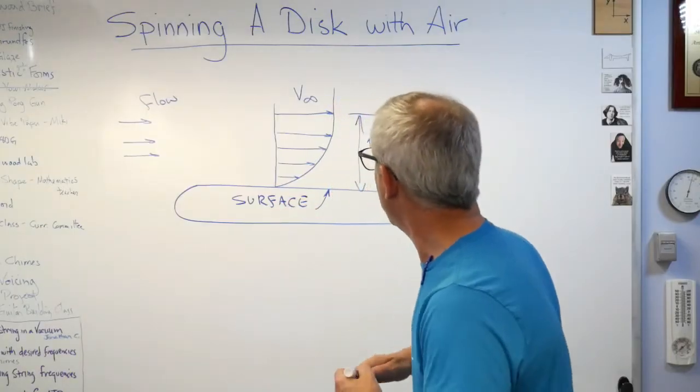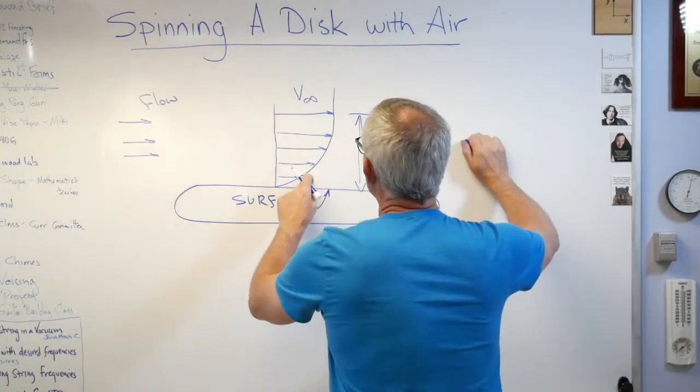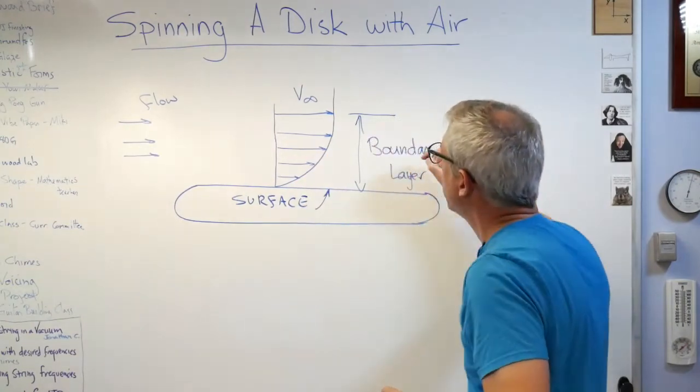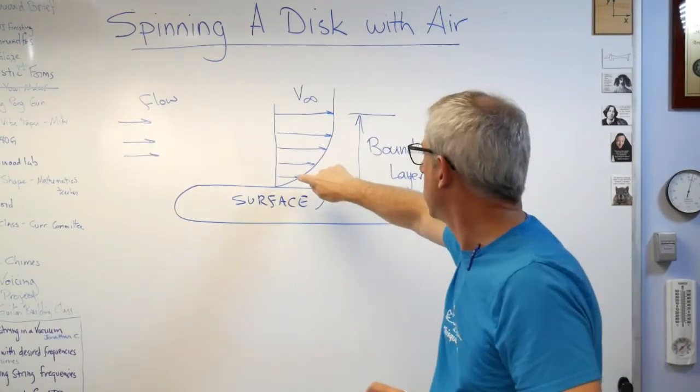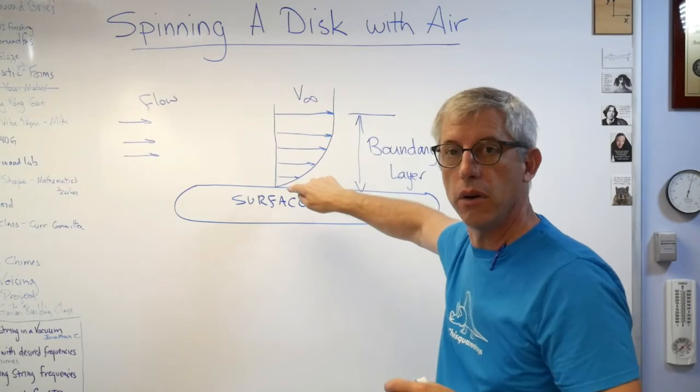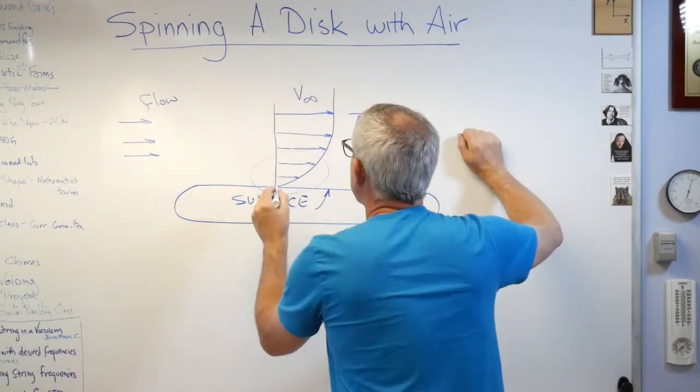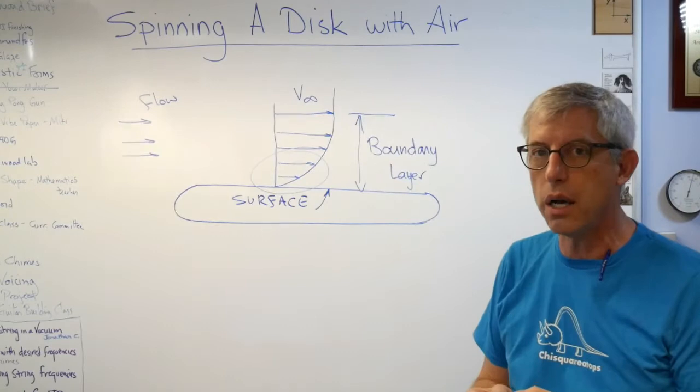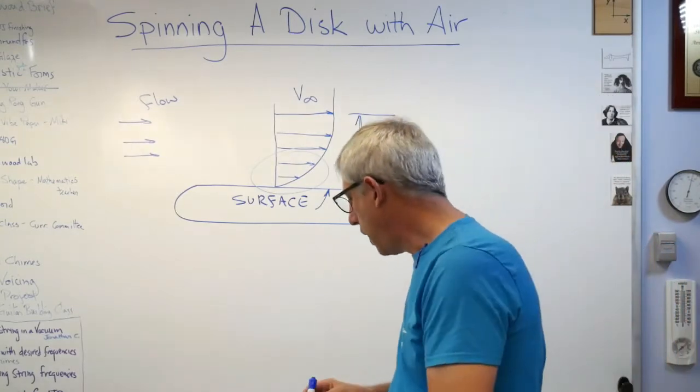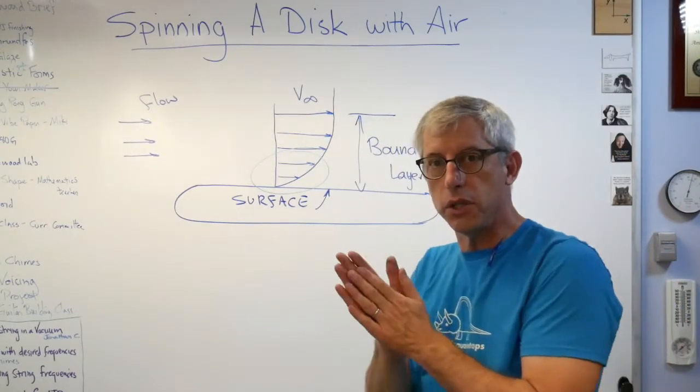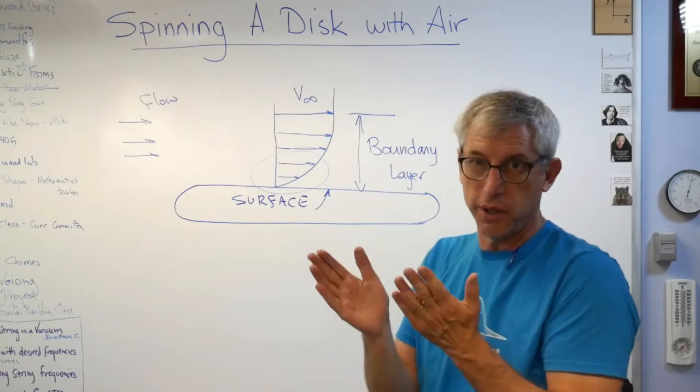This is the boundary layer. Well, if you change velocities over a distance, there must be some forces acting and there are. This is shear forces. Shear forces are acting right in there. If air has viscosity, and it does, that means it can transmit forces in shear.